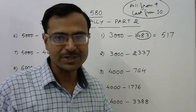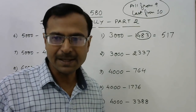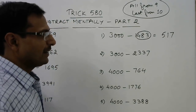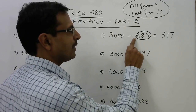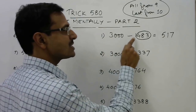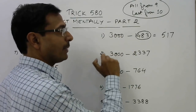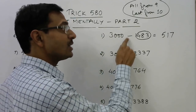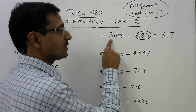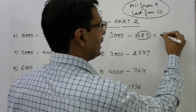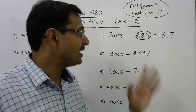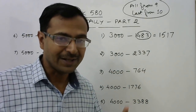But we are subtracting from 3000, not 1000, so we need one more step. Take the leading digit of the number being subtracted — here it is 1 — increase it by 1 to get 2, and subtract that from 3. So 3 minus 2 is 1. Prefix that 1 before 517 to get the difference 1517. That is the answer to 3000 minus 1483.